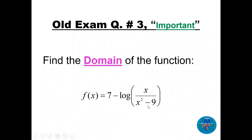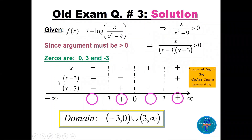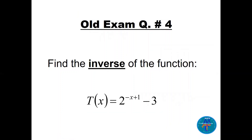Question three: find the domain of the logarithmic function. The argument must be greater than zero, so x over (x squared minus 9) must be greater than zero. Factoring the denominator gives x over (x minus 3)(x plus 3) greater than zero. Using a table of signs with factors x, (x minus 3), and (x plus 3), choosing the positive intervals gives the domain: (minus 3, 0) union (3, infinity).